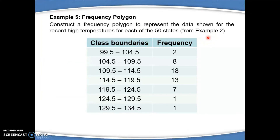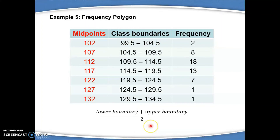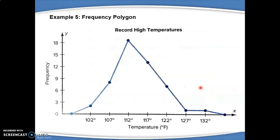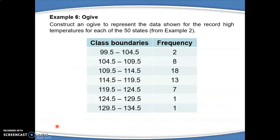To graph the frequency polygon, we need the midpoints. The midpoints are obtained from the class boundaries using the formula: lower boundary plus upper boundary divided by 2. After obtaining all the midpoints and using the frequency as well, you can get your frequency polygon, where the points are applied on the middle of the histogram. Don't forget the important elements such as the title, the midpoints on the X axis, and the frequency on the Y axis with 0.